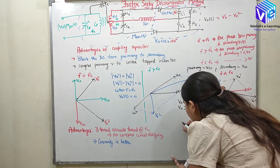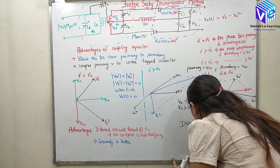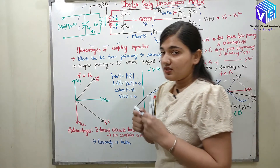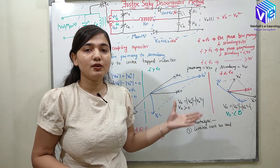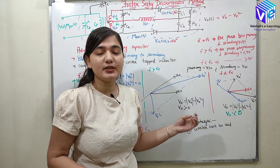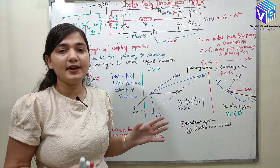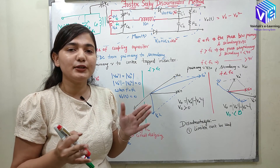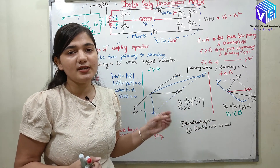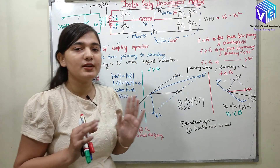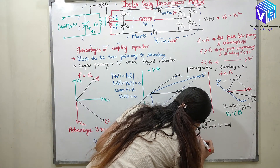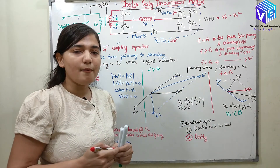Now if I talk about the disadvantages — the first is that a limiter cannot be used. This is the biggest disadvantage of the Foster-Seeley discriminator, because of which the ratio detector was invented. We cannot use a limiter, and the limiter was used to limit the amplitude where noise is present. So we cannot remove the noise, and because of the noise there would be distortions in the output signal which we cannot remove. The second disadvantage is that it is costly and has a complex circuit.